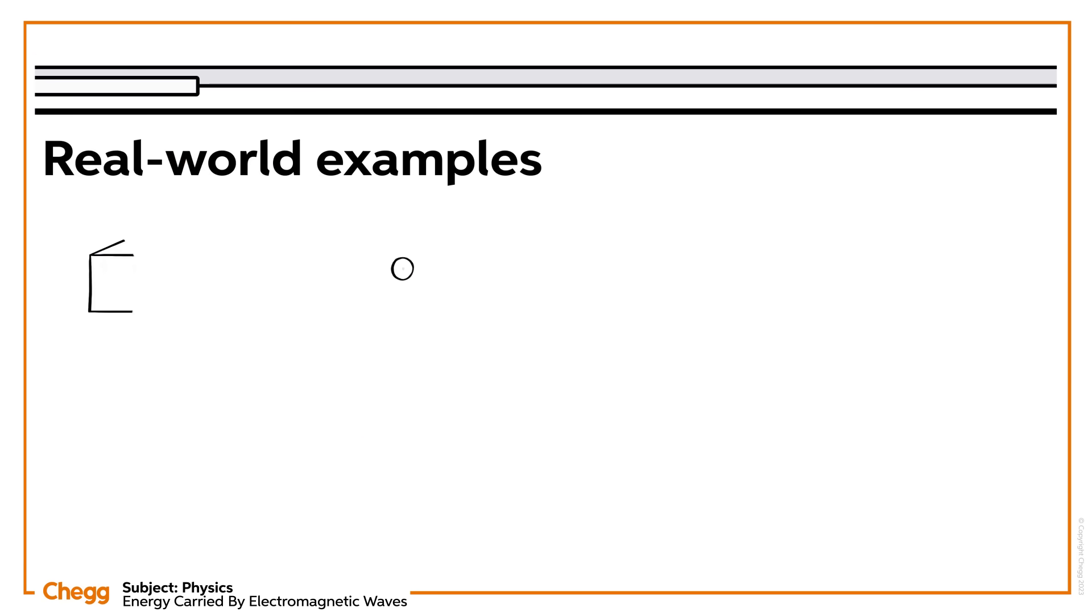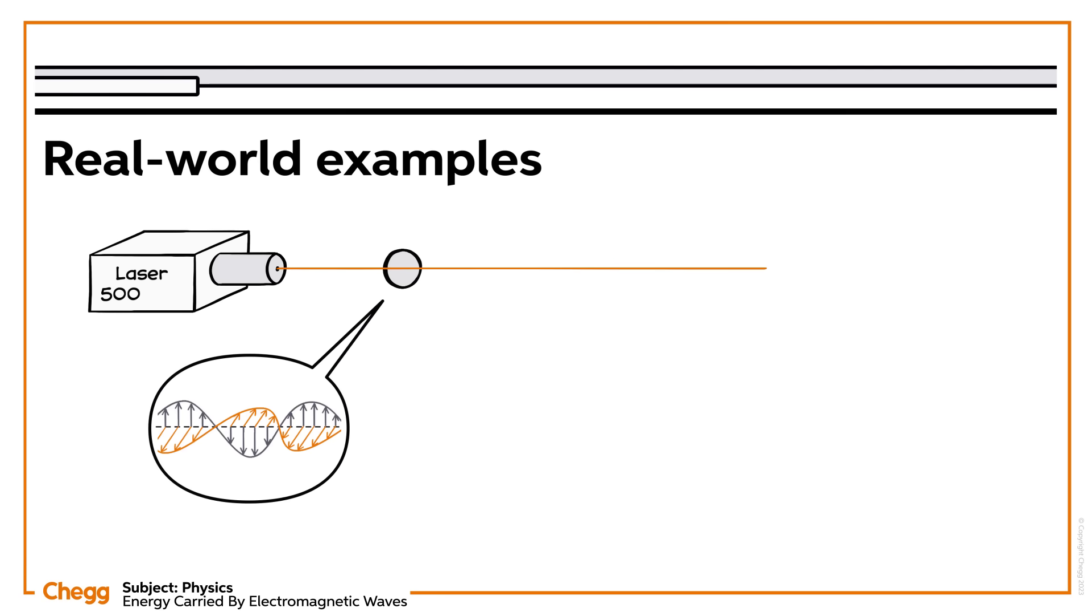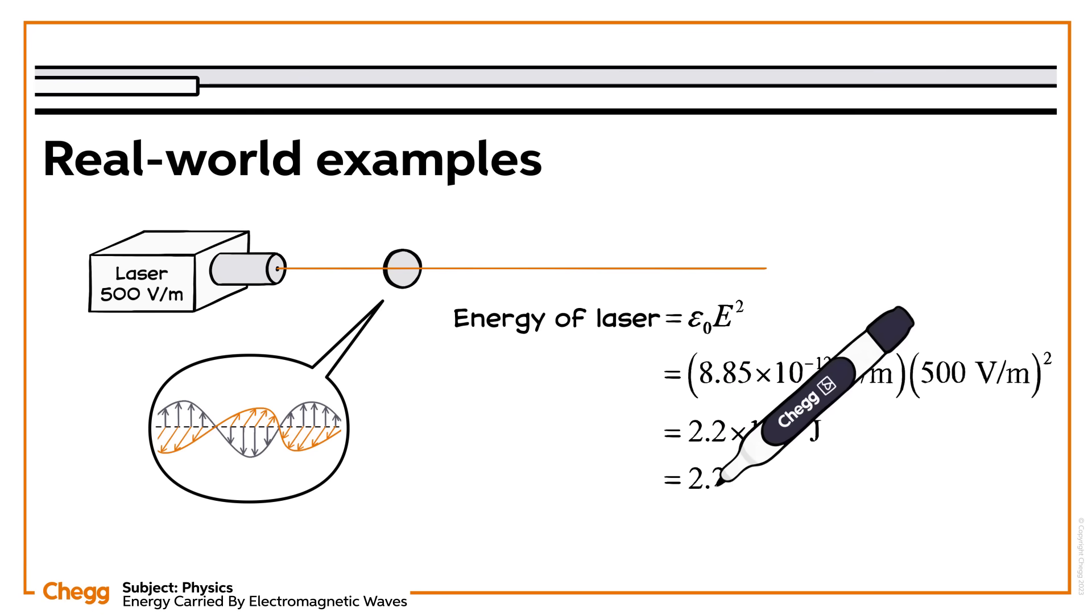Let's take an example. A beam from a laboratory laser has an electric field strength of 500 volts per meter. Find the energy of the laser beam. This will be calculated as follows. We plug in the value given and the permittivity of free space. Do the arithmetic, and this will be our answer.